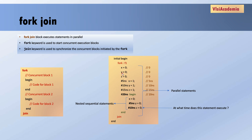Inside a fork-join block all delays are absolute. So x will be initialized to 0 at time 0; x will be assigned at 5 nanoseconds, y at 10, and z at 15, since they run in parallel. After the 20-nanosecond statement, our sequential begin-end statements execute: x is assigned at 20ns, y at 20 plus 5 equals 25ns, and z at 25 plus 10 equals 35ns. This is how we can mix parallel and sequential statements inside a fork-join.